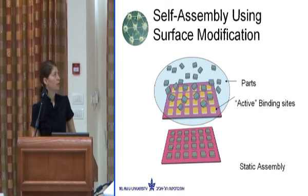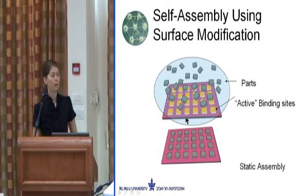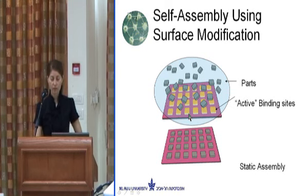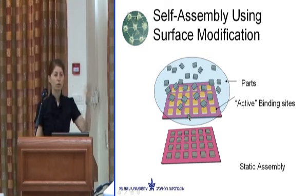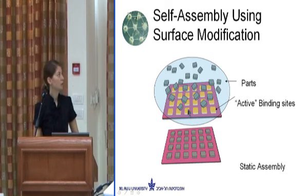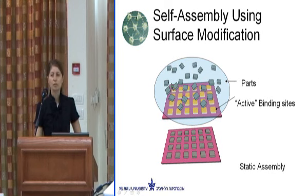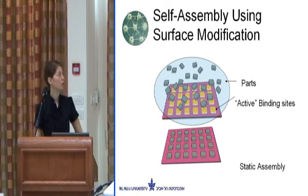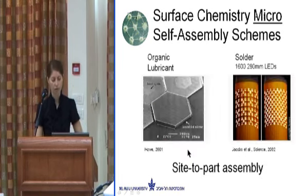Traditionally, the approach has been to have some substrate with active binding sites over it, which could be a certain chemistry, electrical, or in some cases magnetic. Then you have a bunch of these little elements, bring them in, and they fall and sit in the right place, giving you the final result.